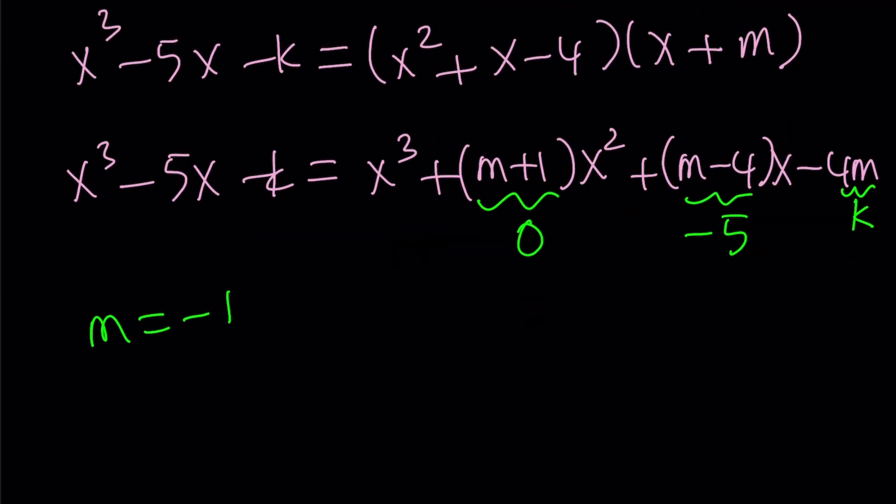From here, we get m equals negative 1. m equals negative 1. And k equals 4m, which means k equals negative 4.